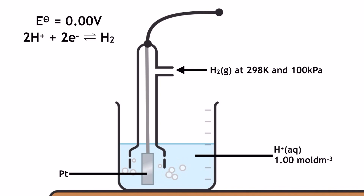Since there is no solid metal in the half equation, we must use a platinum electrode. Platinum is used because we need it to transfer electrons, and also it's selected because it's unreactive — inert — so we don't need to worry about any alternative reactions taking place.